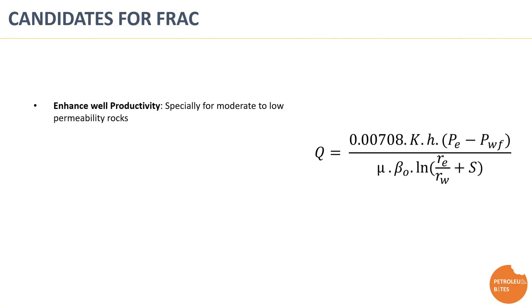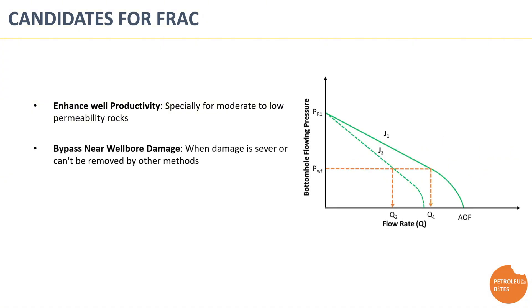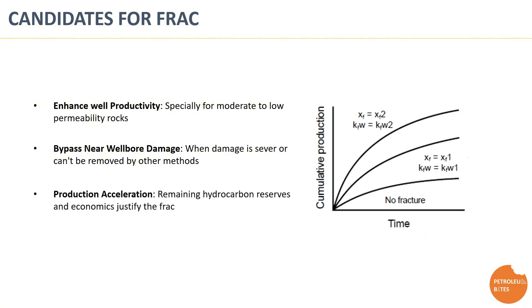Finally, let's discuss the optimum candidates for hydraulic fracturing. Typically, wells that benefit from fracking are those that need the following: enhanced well productivity, especially for moderate to low permeability rocks, where fracking can enhance productivity by several folds; bypassing near-wellbore damage when the damage zone is very deep or cannot be removed by other stimulation methods like matrix acidizing; and production acceleration when maximizing production rate is needed, especially when remaining hydrocarbon reserves and economics justify the frack and remedial work cost.